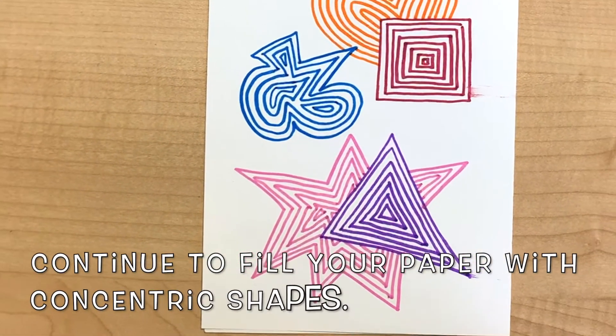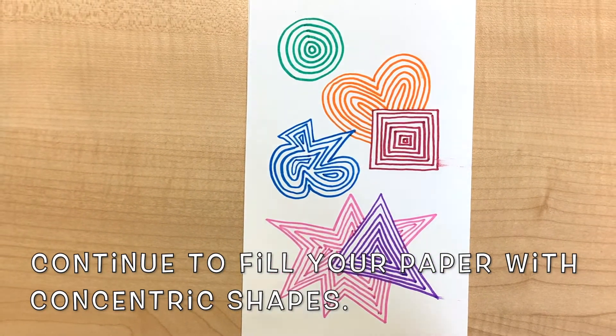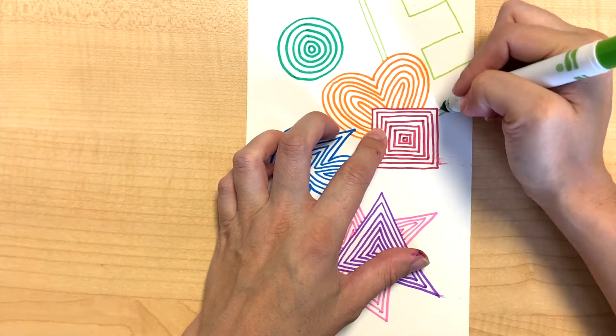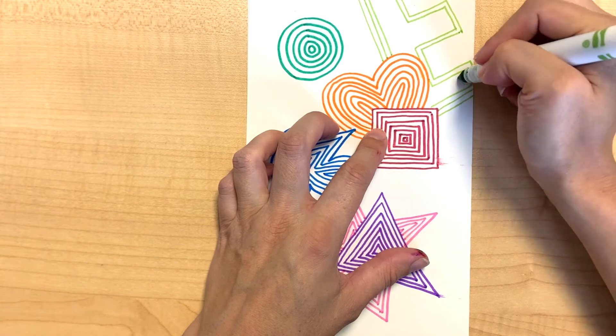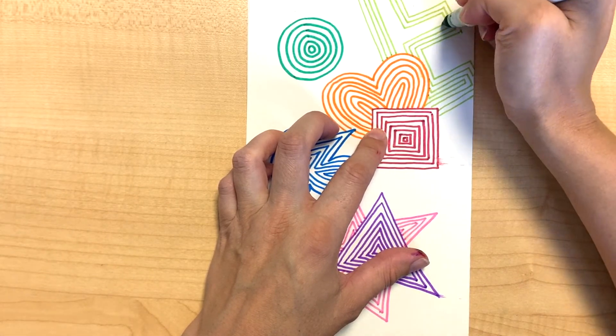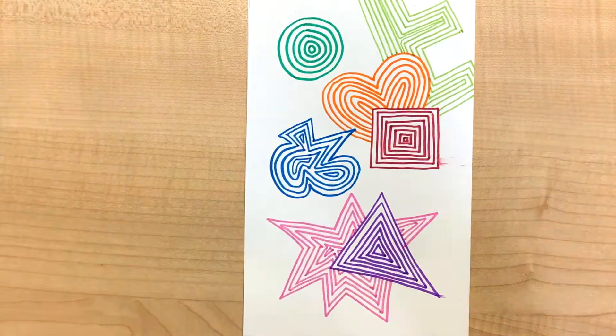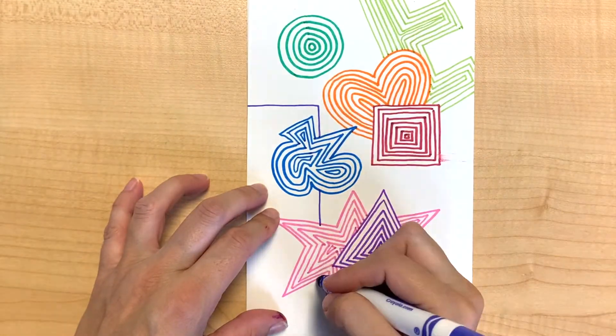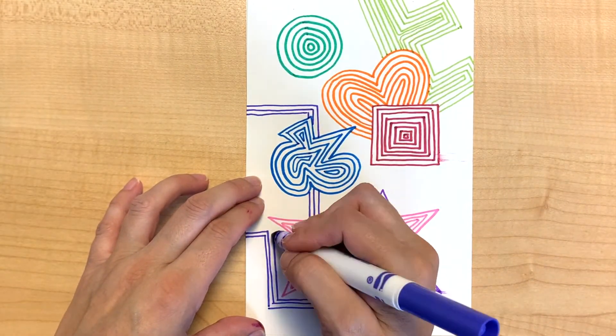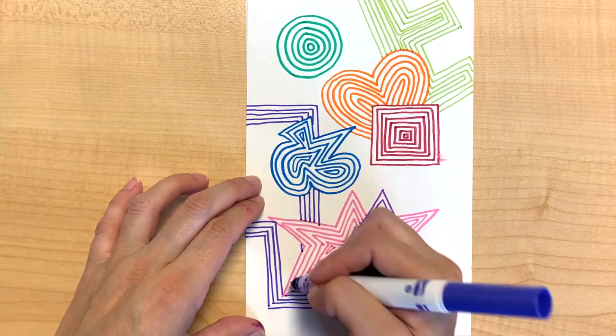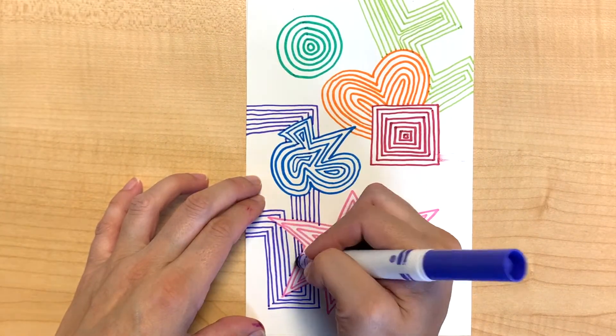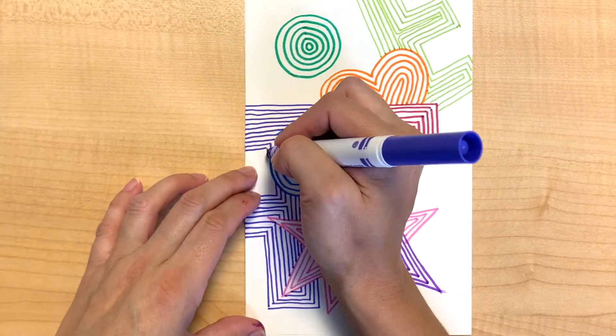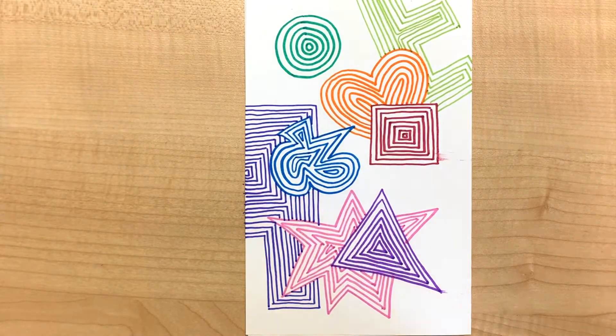Keep going and fill your paper with concentric shapes of any kind. You might even try a letter. Try some big shapes and try some small shapes.